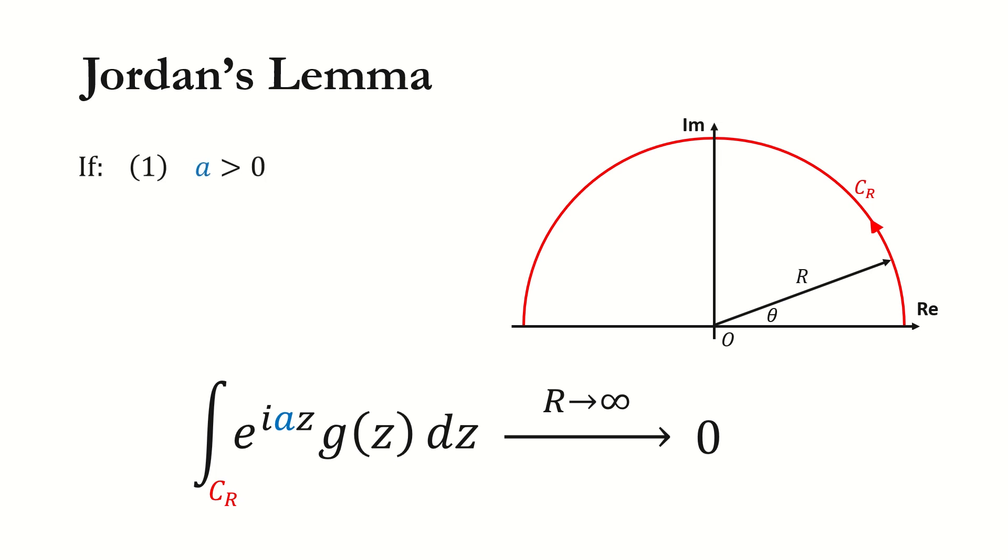Then this integral will vanish when the radius r goes to infinity if it satisfies the following three conditions. The first condition is a is a positive real number. The second one is we can find an upper bound for the modulus of the function g on this semicircle. And note here, this upper bound only depends on the radius r, not on the angle theta. The third condition is this upper bound approaches zero when the radius r goes to infinity. If all three conditions are satisfied, then this integral will vanish when the radius r goes to infinity.